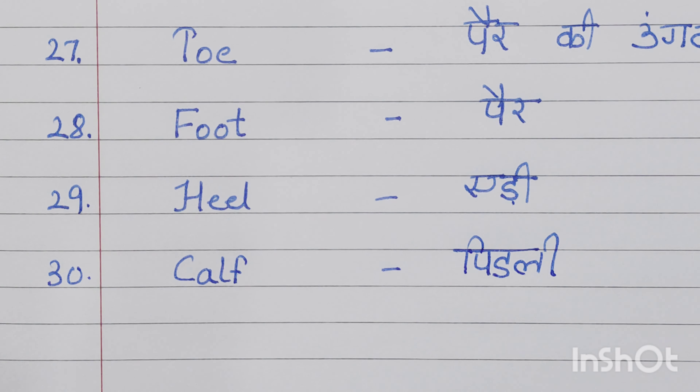We have ten fingers and ten toes. Twenty-eighth is foot, F-O-O-T, foot means pair. Twenty-ninth number is heel, H-E-E-L, heel means aadi. Then last but not the least, thirtieth number is calf, C-A-L-F, calf means pindli. So here we have completed all thirty body parts. Thank you for watching my channel. Bye.